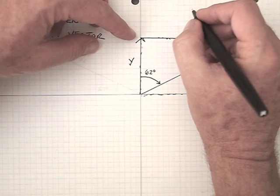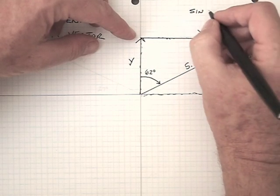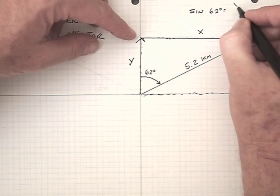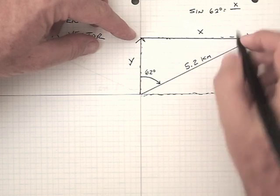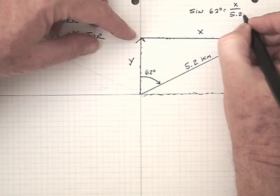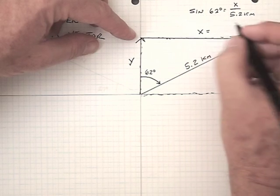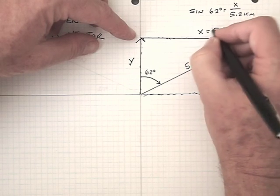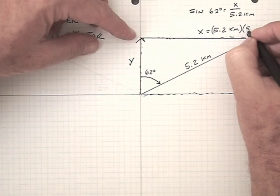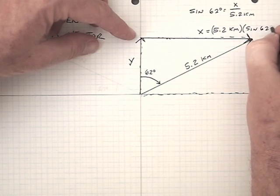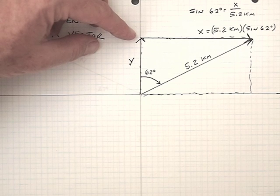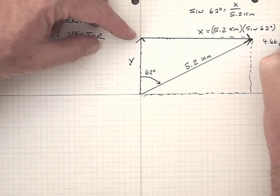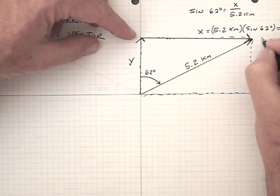Since the sine of 62 degrees is equal to the opposite side x over the hypotenuse 5.2 kilometers, then x is going to be equal to 5.2 kilometers multiplied by the sine of 62 degrees. That turns out to be 4.6 kilometers after we round it off to two significant digits.